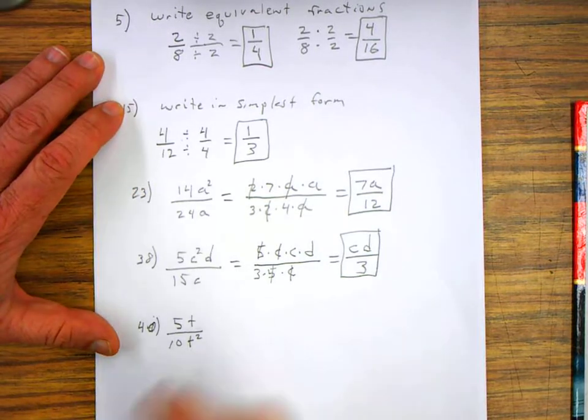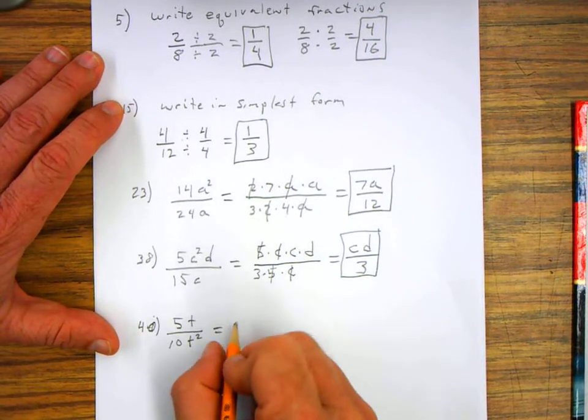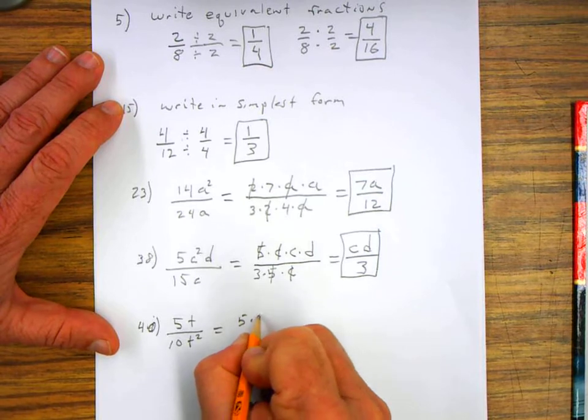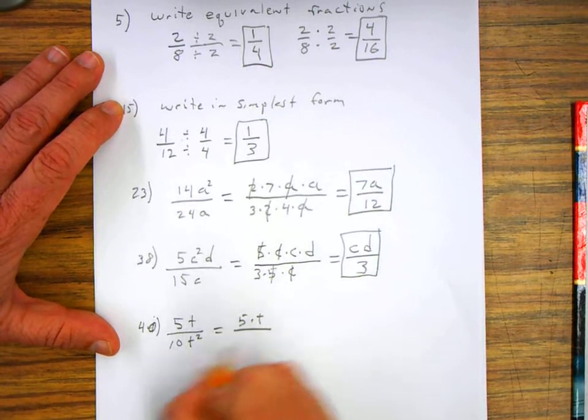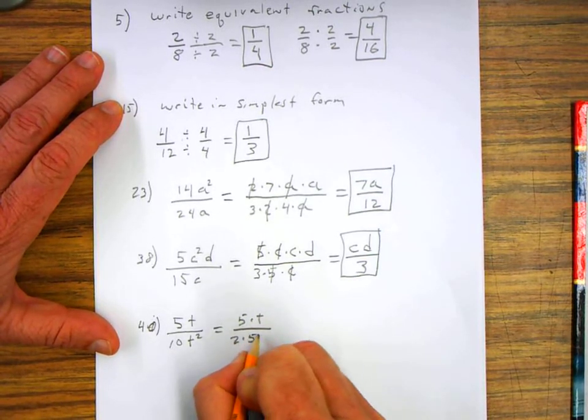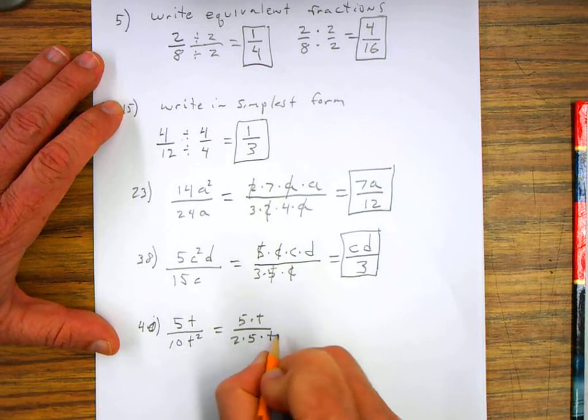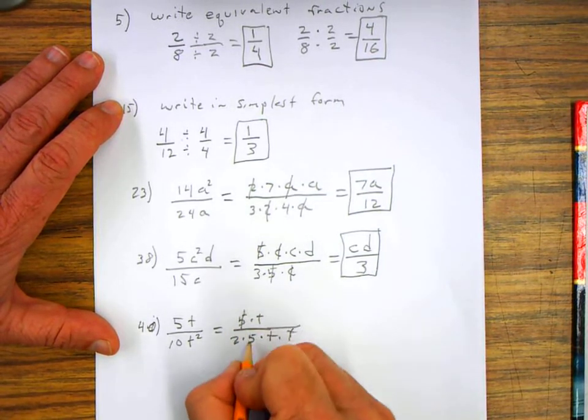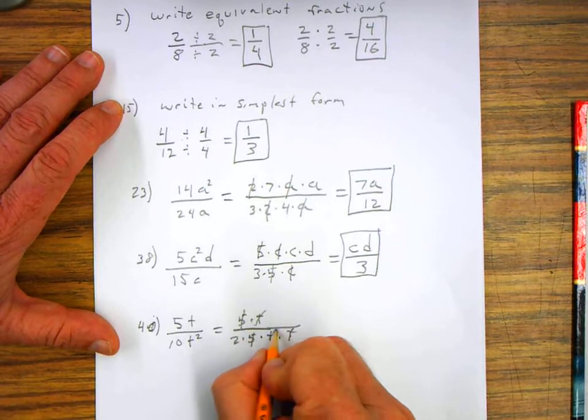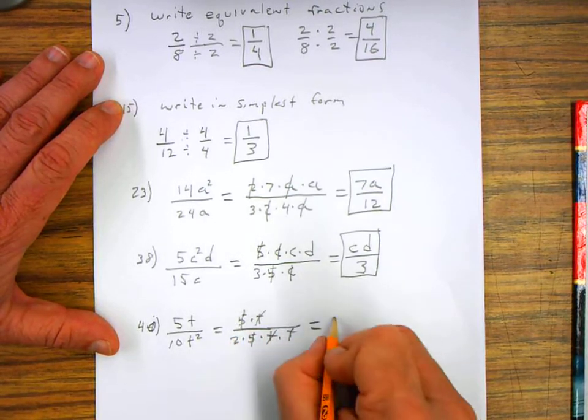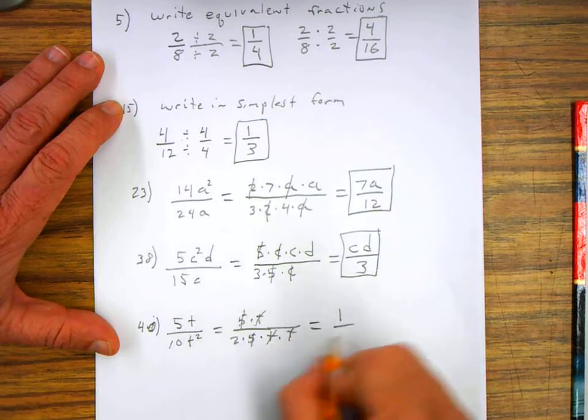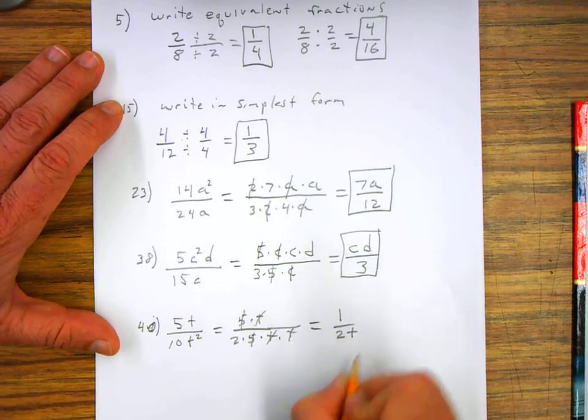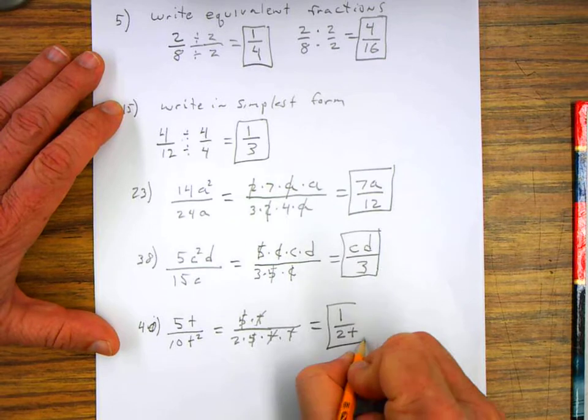Number forty. Again, write it in the simplest form. I have five times t. I can't do much with that. Two times five is equal to ten times t times t. So the fives can cancel, the t's can cancel, and I'm left with one over two t. That's my simplest form.